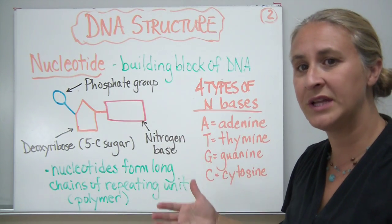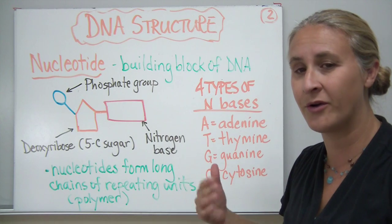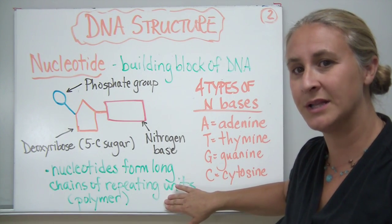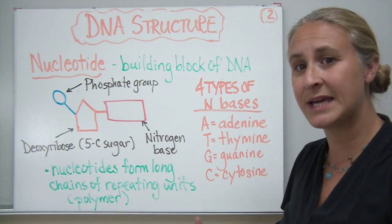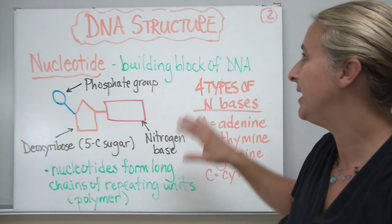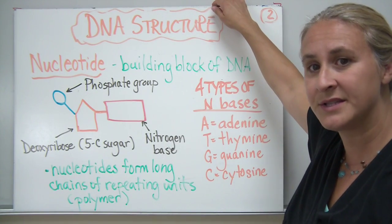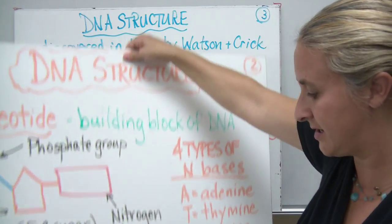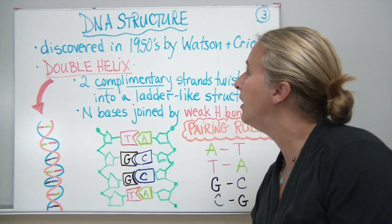Nucleotides form very long chains of repeating units, which when we talked about our other organic compounds we called those polymers. So when our building blocks link together to form these long chains, that's considered to be a polymer. Remember, DNA is an organic compound — it's part of the nucleic acids, which is one of our last organic compounds we'll discuss.